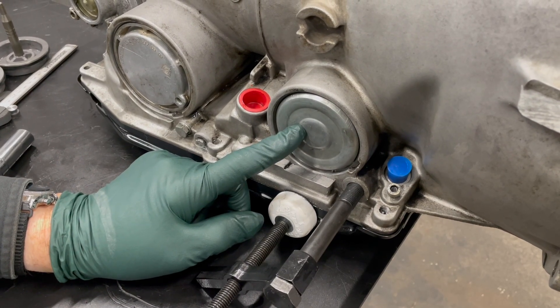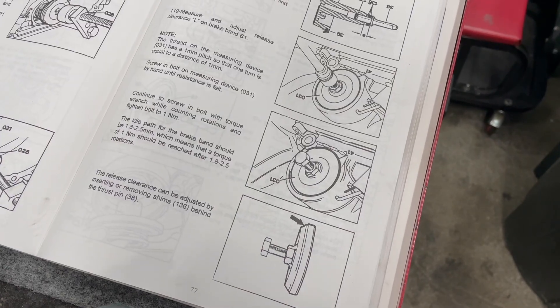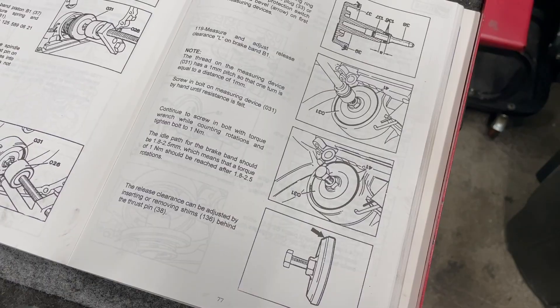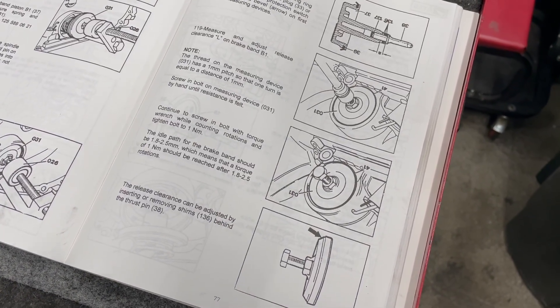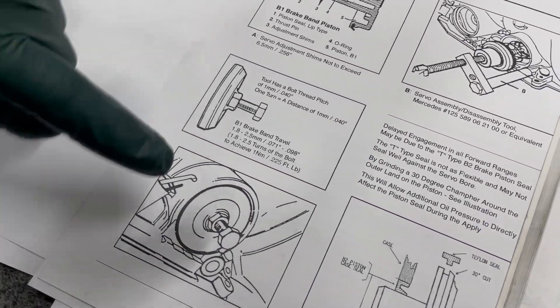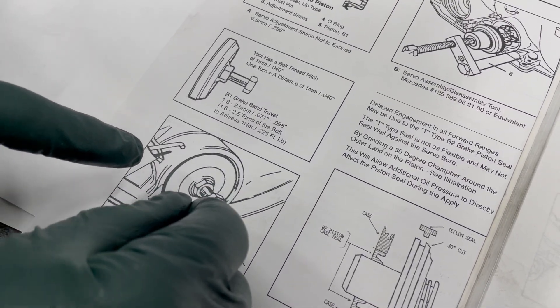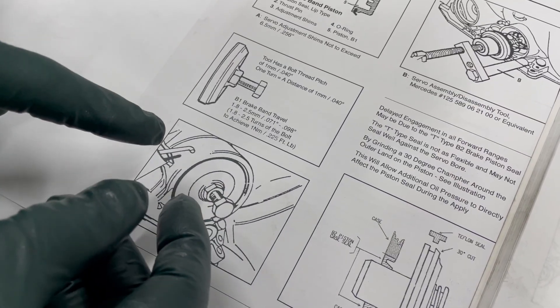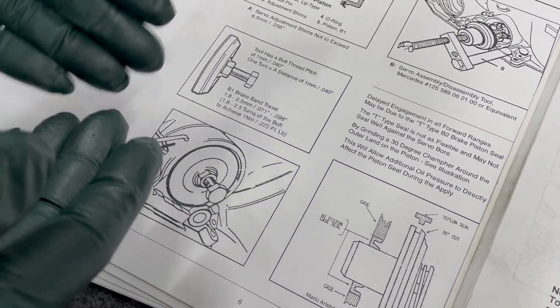The amount in the manual they say it should be 1.8 to 2.5 millimeters. Now how am I going to measure that using this tool? The procedure to do this is in a number of different manuals online concerning the 722.3. It requires a special tool. Here's your special tool here. You turn that bolt and measure how many threads it goes in until you hit the bottom, which gives you a torque of 1 Newton meter.